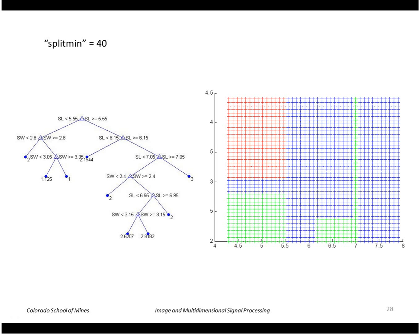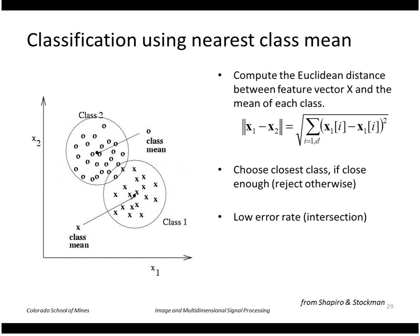Let's look at a different type of classifier now. This is a very simple one that just looks at the nearest class mean. We take our input training vectors, compute the mean of each class and store that, and then we take a new point and figure out which one it's closer to.